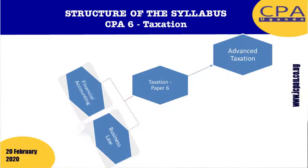When you complete paper 6, the next paper you'll face is paper 9. There are things not examined in paper 6 that are reserved for paper 9 because that's an advanced level — things to do with international taxation, apportionments, VAT, and other more advanced areas. At the level of paper 9, you have to be able to comfortably provide guidance to businesses on tax matters.